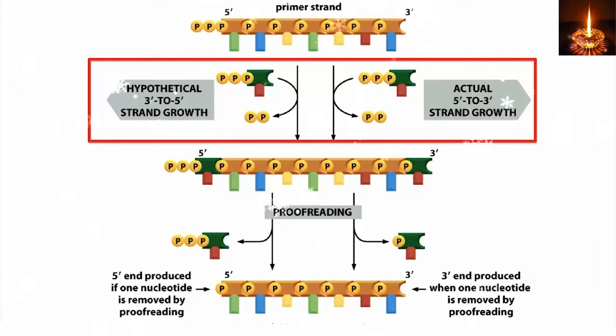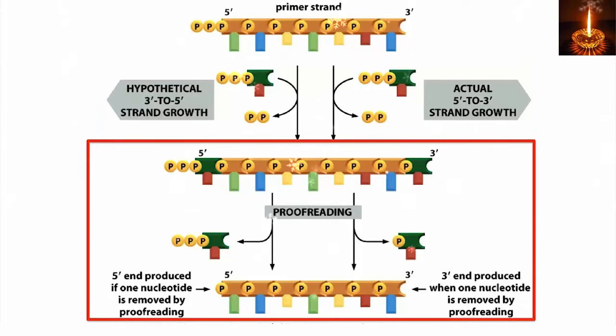So in both cases, we can drive the reaction forward. But now, let's look at the proofreading process. If an error is made, the nucleotide is removed by the 3' to 5' exonuclease activity of polymerase.